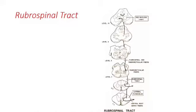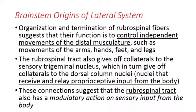The organization and termination of the rubrospinal tract suggests its function is to control independent movements of the distal musculature, such as arms, hands, feet, and legs. The tract also gives off collaterals to the sensory trigeminal nucleus and the face, which in turn gives off collaterals to the dorsal column nuclei that help receive and relay proprioceptive input from the body. There's also evidence that the rubrospinal tract has a modulatory action on sensory input from the body, serving a sensory modulatory function in addition to its motor function.